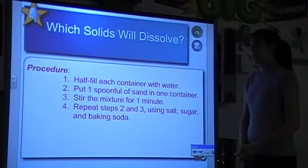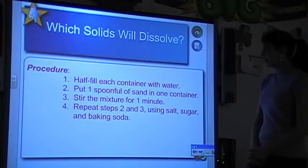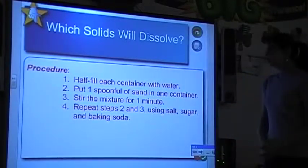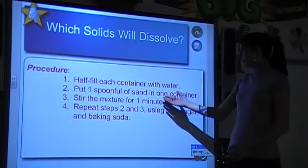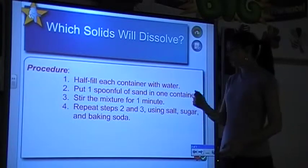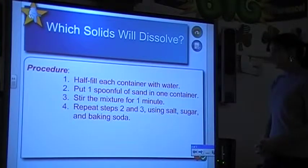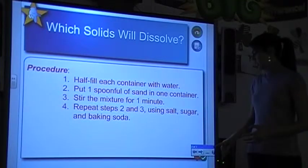We'll start off with a little experiment. The procedure is listed up on the smart board. They'll half fill each container with water, put one spoonful of sand in one container, stir the mixture for one minute, and then repeat steps two and three using salt, sugar, and baking soda.